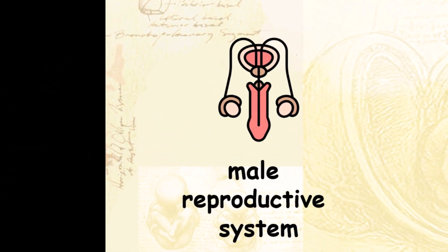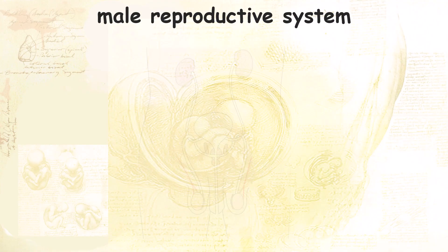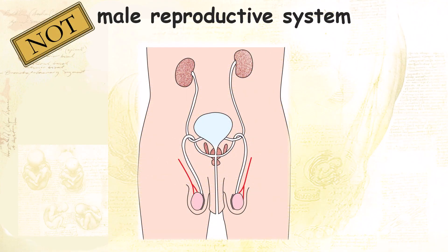When you are shown a diagram of the male reproductive organs, there might be organs that are not part of the male reproductive system, such as the urinary bladder and ureter. You might be asked to label the ureter, as one might confuse the tube with the urethra.